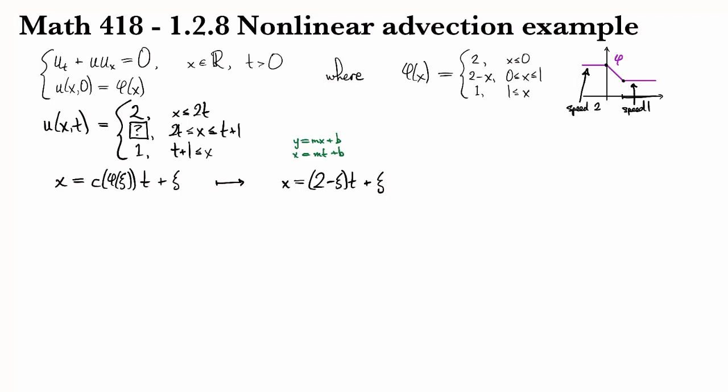So then, let me switch back to black. So then we can solve this one for ξ by rearranging. So what happens here is that we have x minus 2t is equal to minus ξt plus ξ is one minus t. So I can divide this part over to the other side, and I get ξ is equal to x minus 2t over 1 minus t. All right.